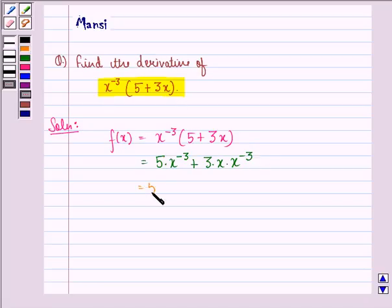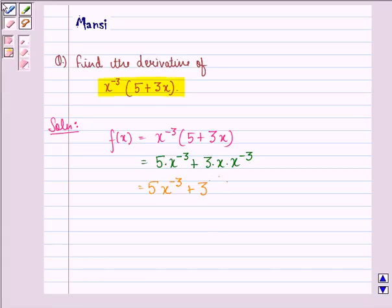This can be further written as 5x^(-3) + 3x^(-3+1). Since -3 + 1 becomes -2, it is 5x^(-3) + 3x^(-2).